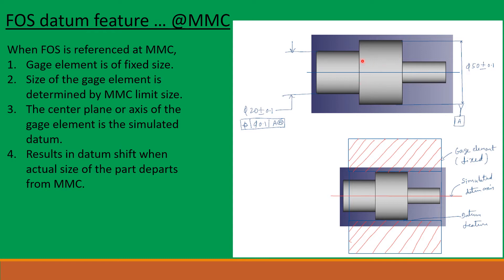Here in this picture, this round part has this diameter specified as datum A. For this portion of the part, we have specified a dimension of 20 plus/minus 0.1 and a position tolerance of DIA 0.1 with respect to datum A, and the MMC symbol is given. So for this part, the gauge element is of a fixed size and the simulated datum axis of this gauge element is the simulated datum.